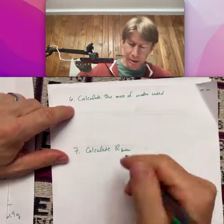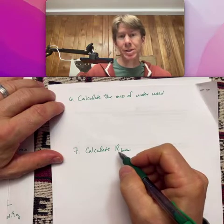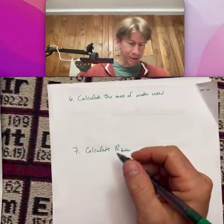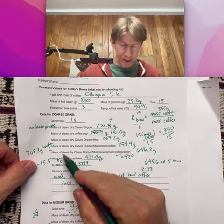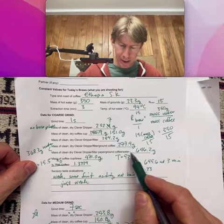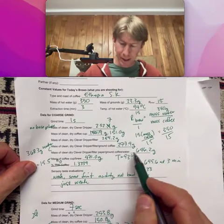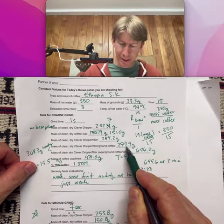One is—well, really we want to calculate the brew ratio, but before we can do that, we need to calculate the mass of water used. To get the mass of water used, you need the mass of the clean, dry clever dripper including the water, minus the one right before it. So for this brew, it's 646.2 minus 277.9.